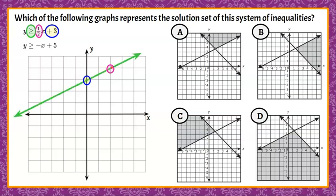So when we connect our points and draw our line, we know that it's going to be a solid line because it is greater than or equal to. So because it can be equal to, any point on this boundary line is also a solution to the inequality.